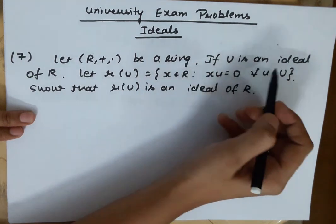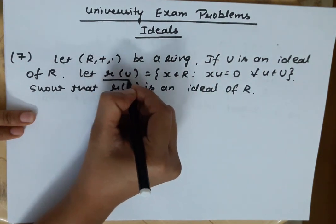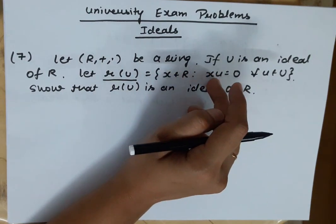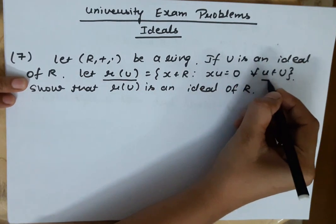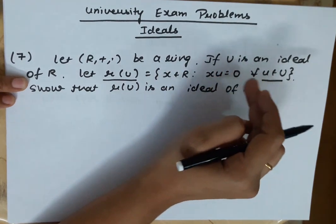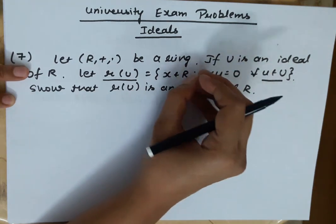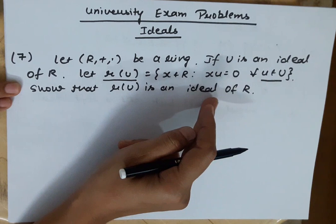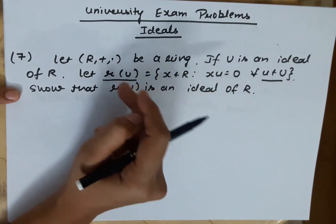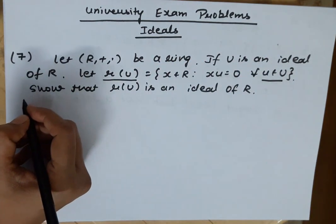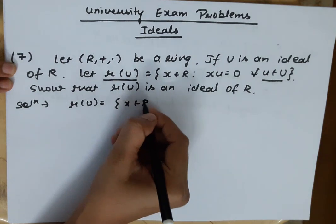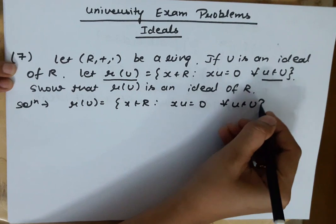So R(+,·) is a ring and U is an ideal of R. We are taking the set R(U), which consists of elements of R. Those x belonging to R such that the product x·u = 0 for all elements u of U. We have to show that R(U) is an ideal of R.